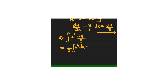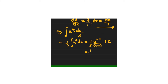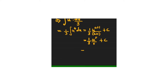Integrating this, it becomes 1/3 times u to the power of 4 plus 1, over 4 plus 1, plus a constant of integration C. So this becomes 1/3 times u to the power of 5 divided by 5 plus C, which equals u to the power of 5 over 15 plus C.